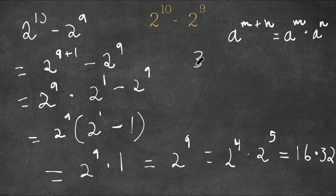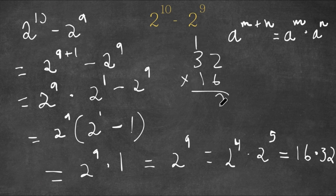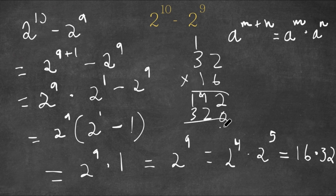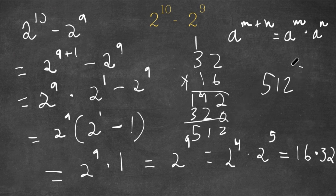We have 32 times 16. 2 times 6 is 12, carry the 1. 6 times 3 is 18, 18 plus 1 is 19. Then we add our 0. 1 times 2 is 2, 3 times 1 is 3. 2 plus 0 is 2, 9 plus 2 is 11, carry the 1. 3 plus 1 plus 1 is 5. So our final answer is 512.